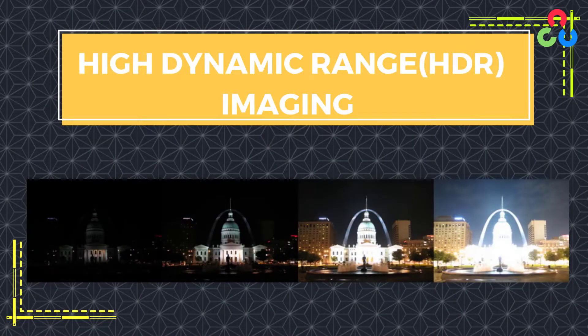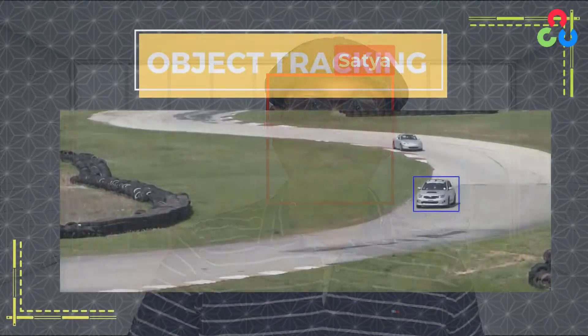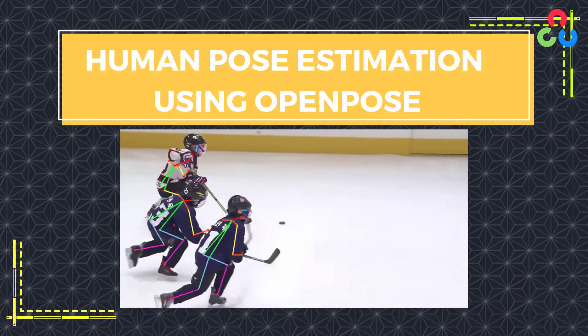Next, we will dip our toes into computational photography and create high dynamic range images by combining photos taken using different exposures into one single beautifully lit photo. OpenCV also implements many classical machine learning algorithms and has an entire module dedicated to deep learning inference. We will learn how to implement face detection and object tracking. Finally, we will wrap up the series by learning how to use the deep learning module for object detection and pose estimation.